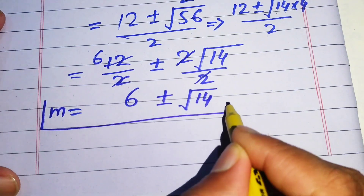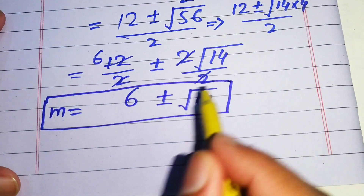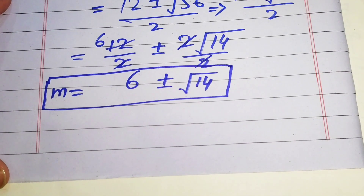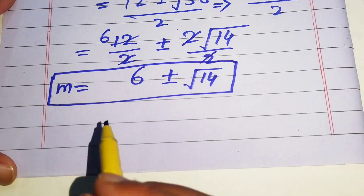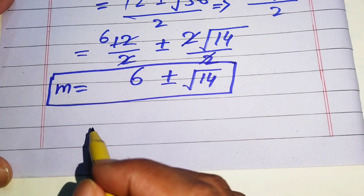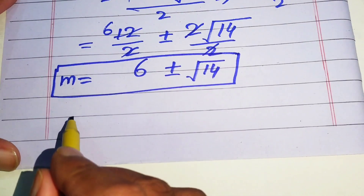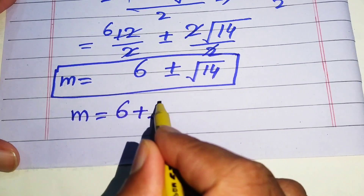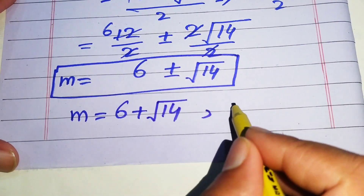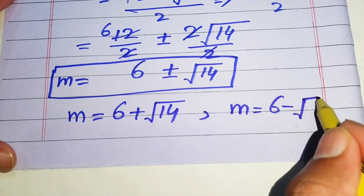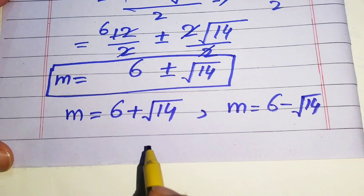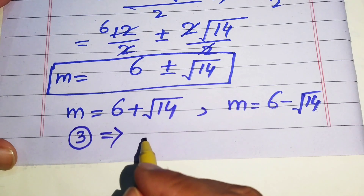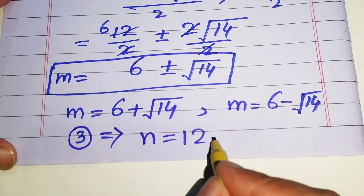These are the two values of m. We separate them: the positive case is m equals 6 plus square root of 14, and the negative case is m equals 6 minus square root of 14. From equation number 3, n equals 12 minus m, which we will use to find the corresponding values of n.